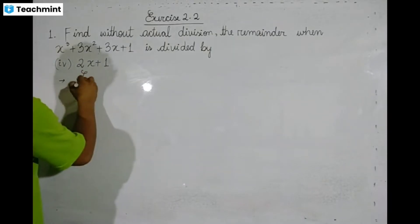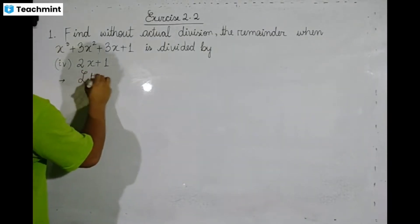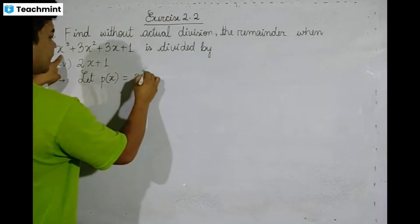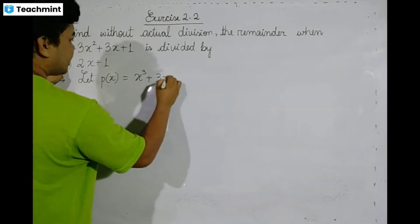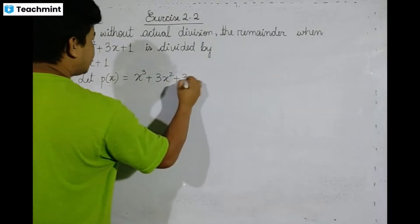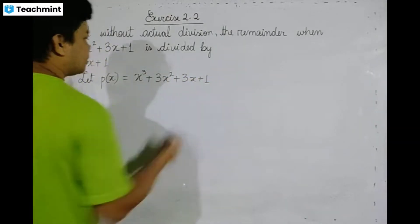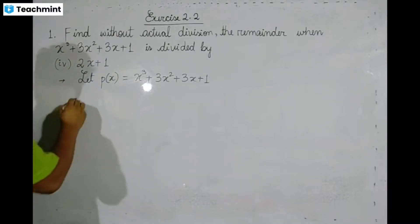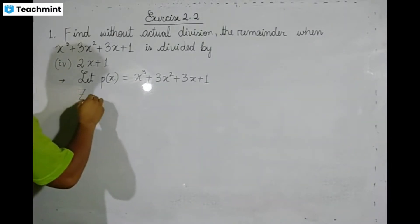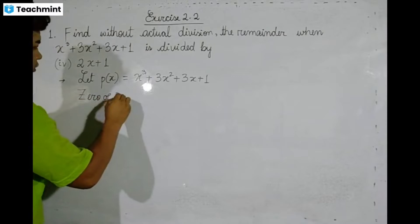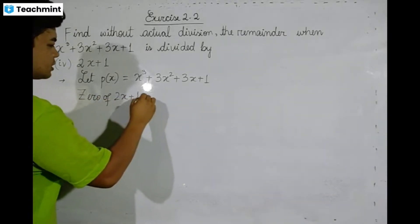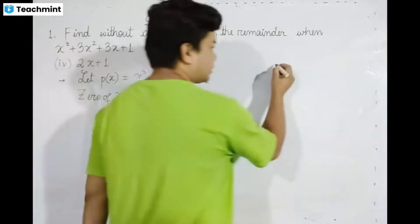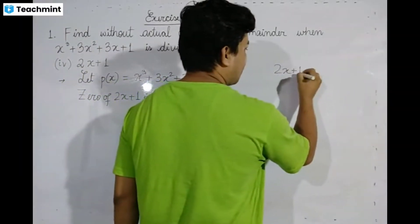So let's get started. p of x is equal to x cubed plus twice x squared plus 3x plus 1. Of course, g of x is equal to twice x plus 1, and twice x plus 1 is equal to 0.